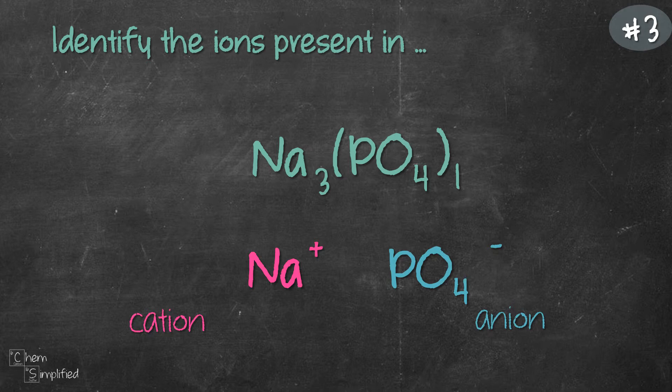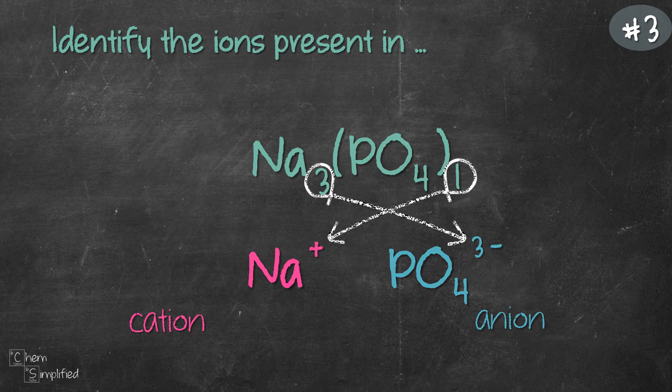So let's confirm the charge. We cross over. 3 from Na will cross over to PO4. So that means we actually have PO4 3- for the anion. And the 1 from PO4 will cross over to Na and that means our cation is actually Na+.